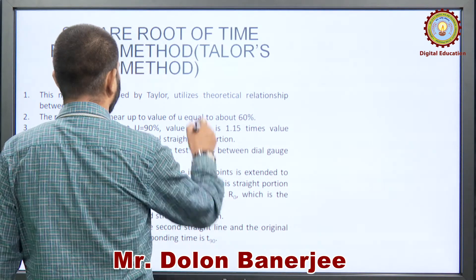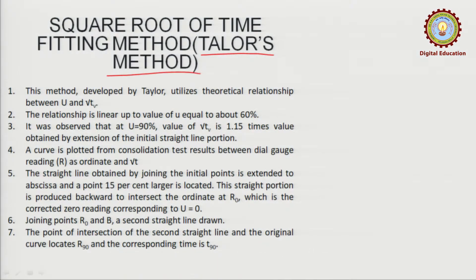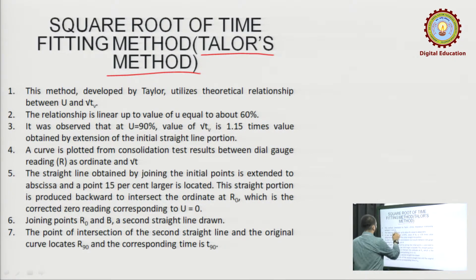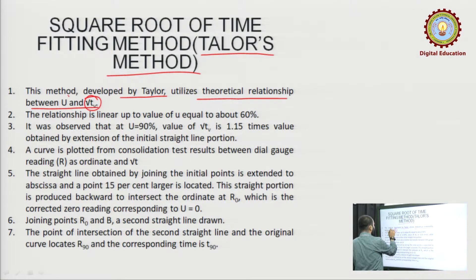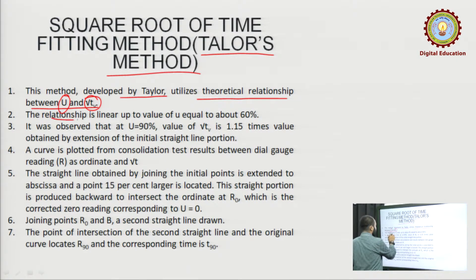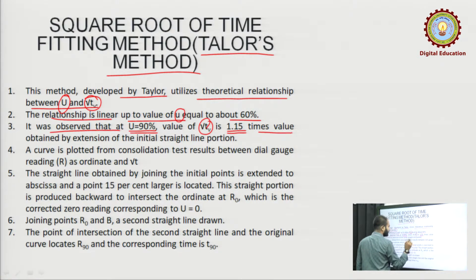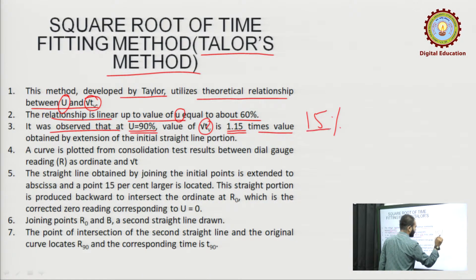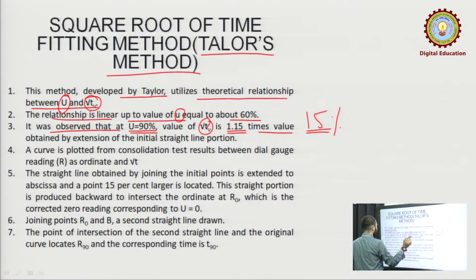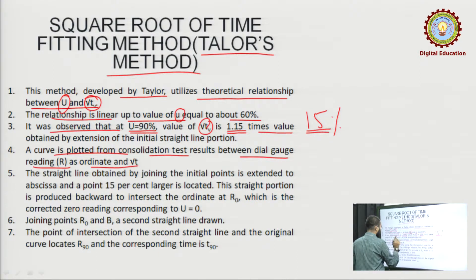First, the square root of time fitting method, also called Taylor's method. This method utilizes the theoretical relation between √t and u (degree of consolidation). The relationship is linear up to where u equals 60 percent. It was observed that at 90 percent, the value is 1.15 times — 15 percent more than the general value. A curve is plotted from consolidation test results between the dial gauge readings and the √t value.